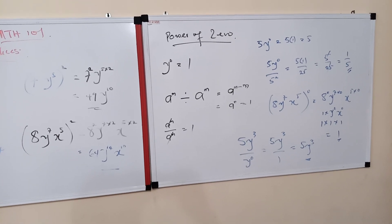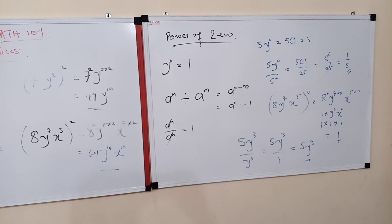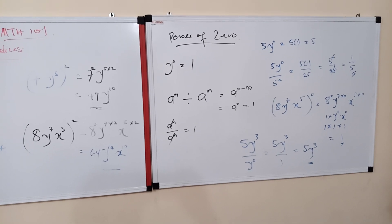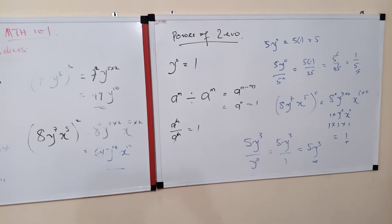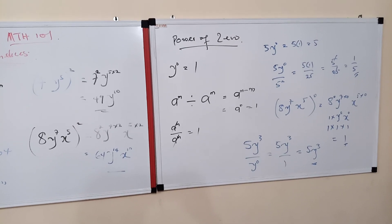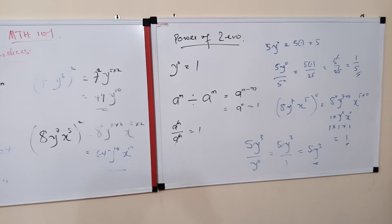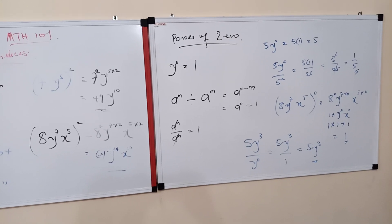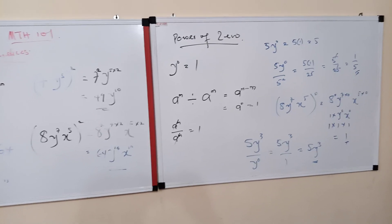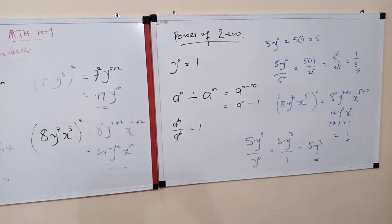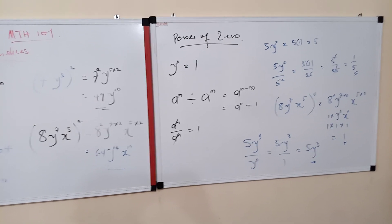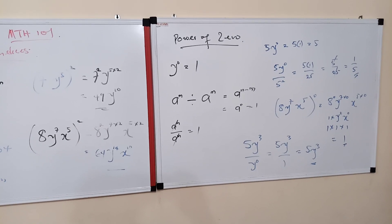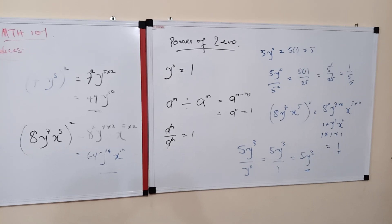To summarize: if a particular entity is enclosed in a bracket raised to a power, that index is affecting everything inside the bracket. And any particular entity raised to power zero equals one. Now let's consider negative indices.